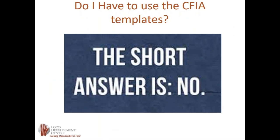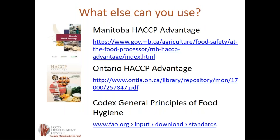Do you have to use the CFIA templates? The short answer is no — there are lots of options. Manitoba HACCP Advantage is a really good option, and all sections of the Manitoba HACCP Advantage workbook cover some part of the preventive controls for a PCP. Ontario HACCP Advantage is another good option. The Codex General Principles of Food Hygiene is also a good option. All of these programs use the same basic strategy: determine the hazards, then put programs and procedures in place to control them.